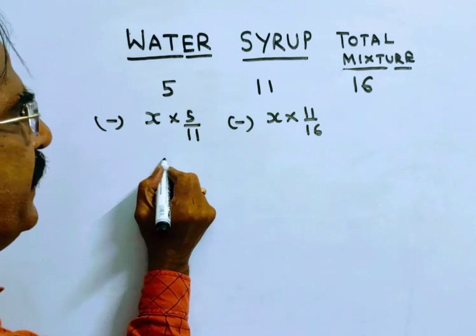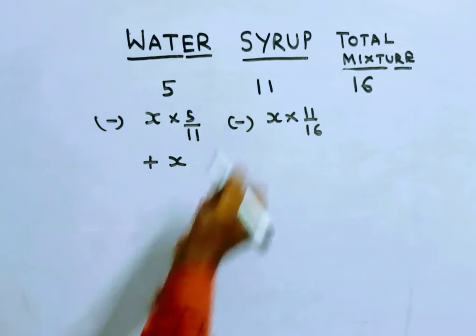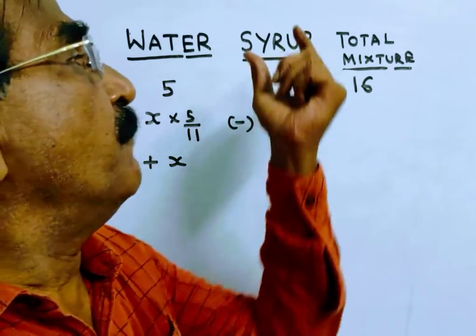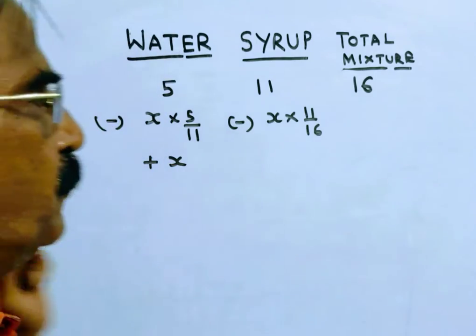And we have added and replaced with water, so plus x liters water. Now let us see the position of syrup and water and let us equate that to the ratio 3 is to 2.